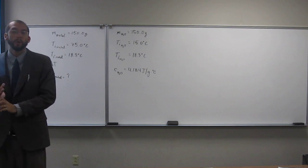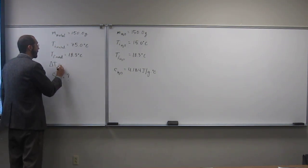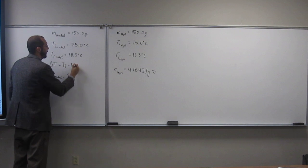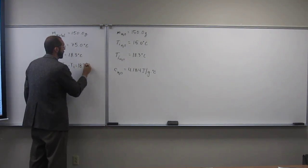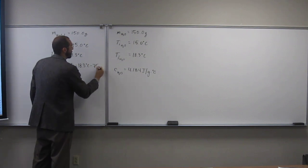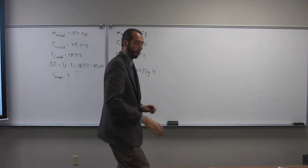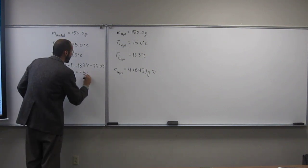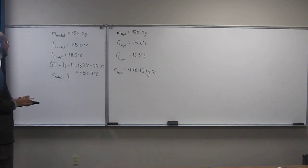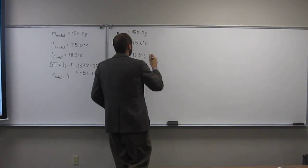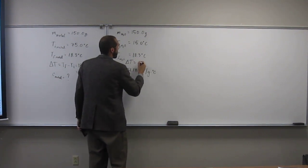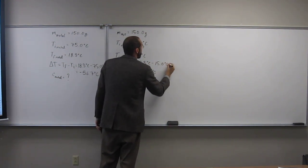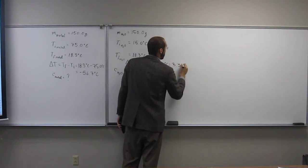So we're going to need to know the specific heat for both of these substances, or that equation for both of these substances. So delta T, of course, is Tf minus Ti. And in this case, it's 18.3 degrees C minus 75.0 degrees C. Minus 56.7. What is it? 56.7. So negative 56.7. So that's the change in temperature of that. So let's go over here and do the change in temperature of this one. So delta T here is going to be final minus initial. So 18.3 degrees C minus 15.0 degrees C is 3.3 degrees C.